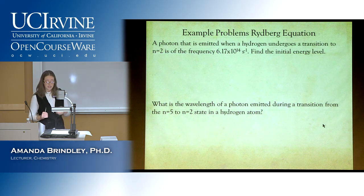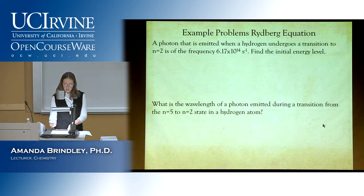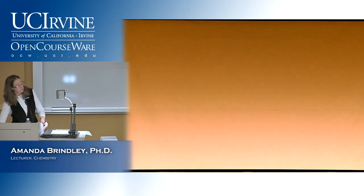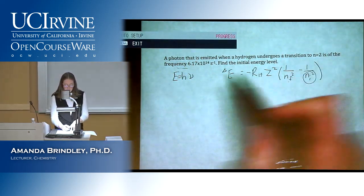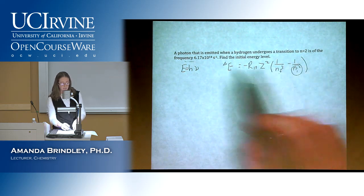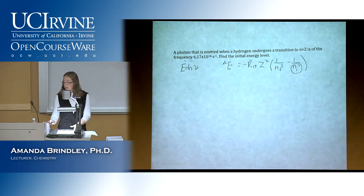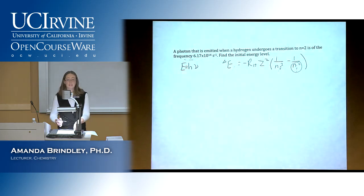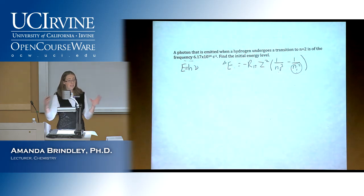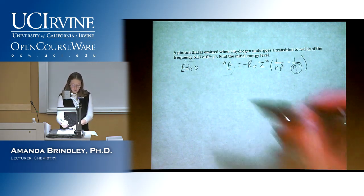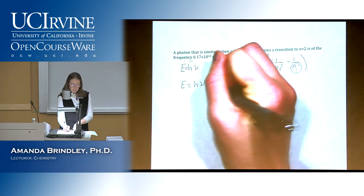We need to figure out how to fill this in. We're looking for NI. We have our E equals h nu and delta E equals negative R_H times z squared times (one over N_F squared minus one over N_I squared). We know we're looking for NI, but we don't have delta E — only the frequency of the photon. We can find delta E because the energy of the emitted photon equals the magnitude of this energy.